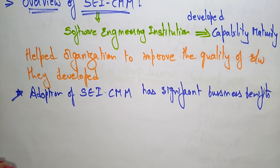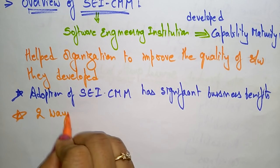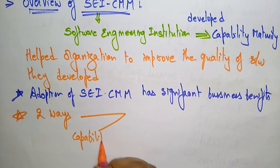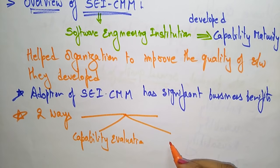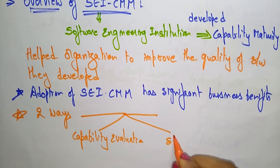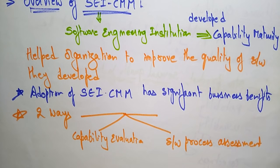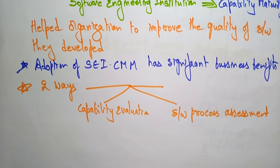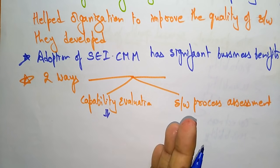Now let us see — SEI CMM can be used in two ways. One is Capability Evaluation, and another is Software Process Assessment. Capability Evaluation provides a way to assess the software process capability of an organization.